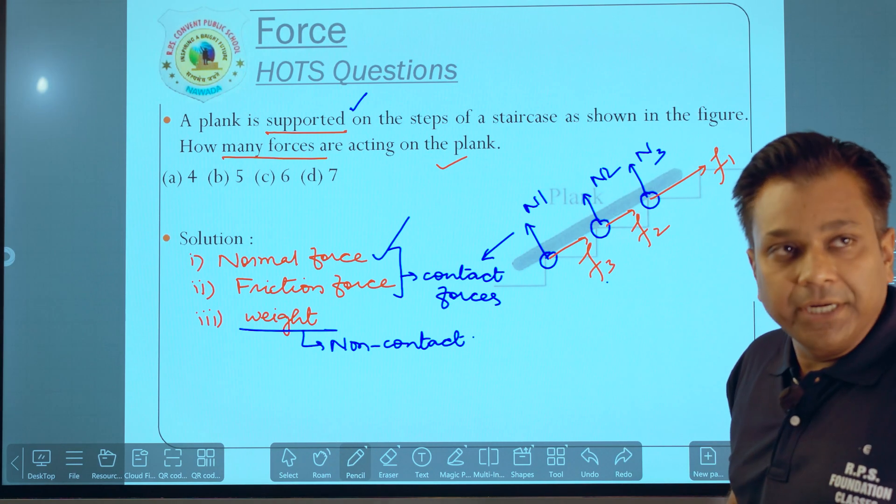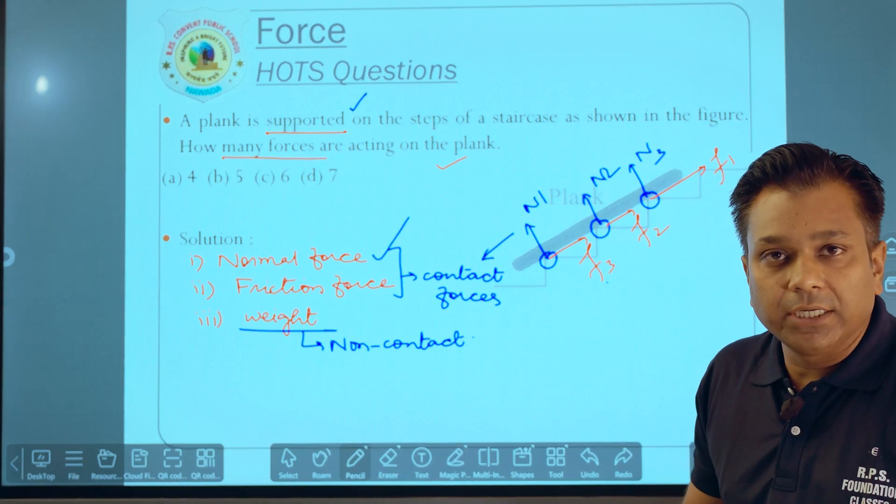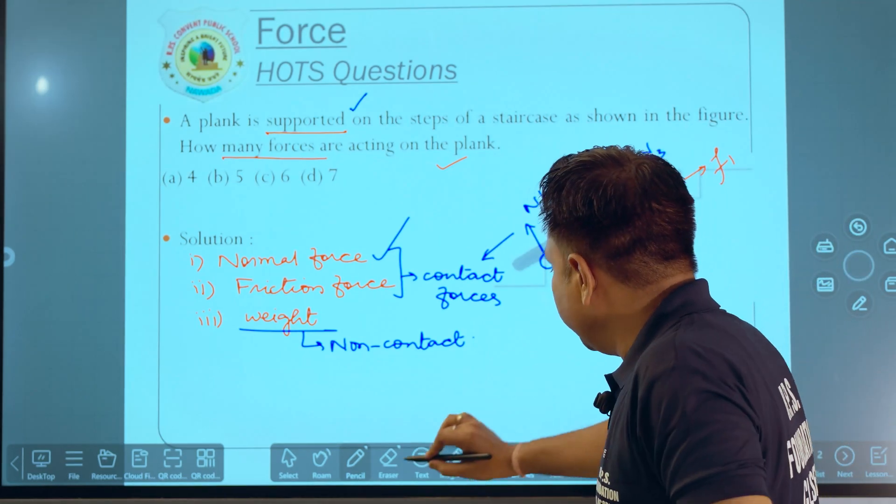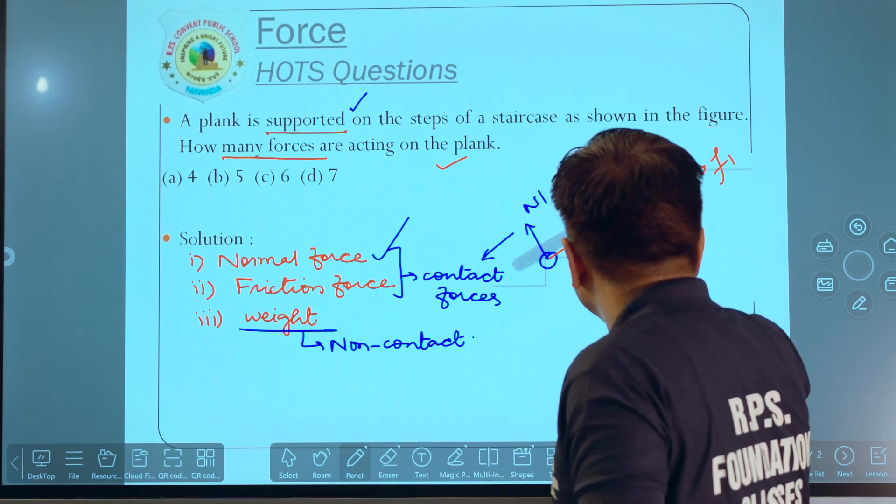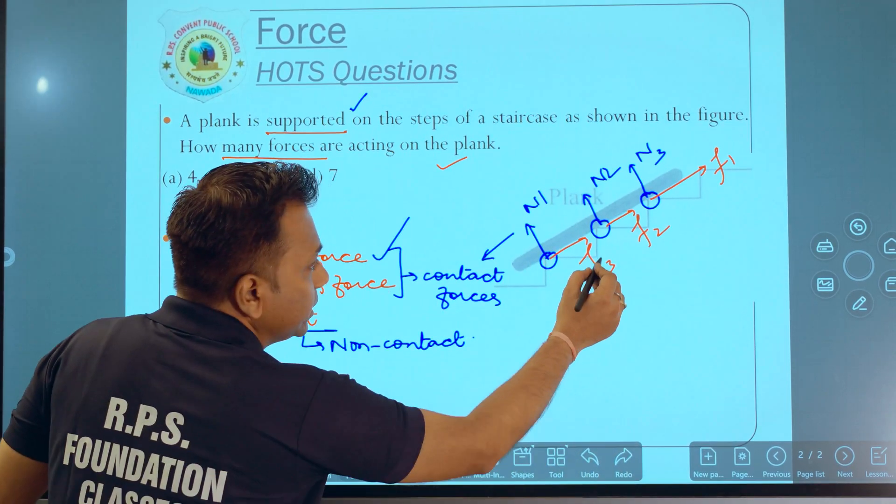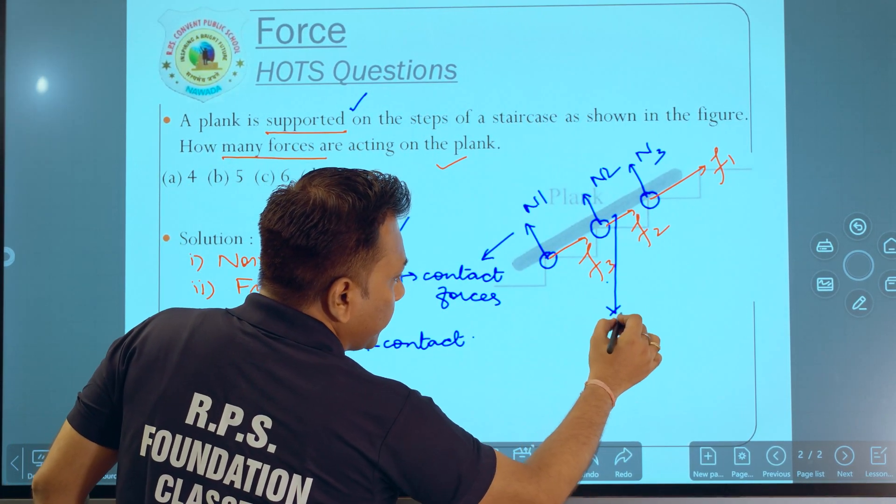And the last one we are left with is the weight. Weight acts vertically downward direction. So the weight is going to act in a vertical downward direction. So this is the weight of the body, we take mg.